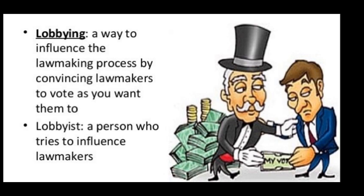1,400%. Can you imagine what that kind of raise would do for you? Number four: thanks to loopholes in how federal law defines what a lobbyist actually is, many elected officials go on to take what are effectively revolving door lobbying jobs without ever having to officially register as lobbyists. Researchers estimate that there's actually twice as much lobbying as what's publicly disclosed, making lobbying a $7 billion a year industry — and only half the people being paid to influence our elected officials are required to follow what few rules there actually are.